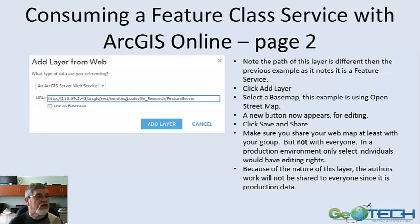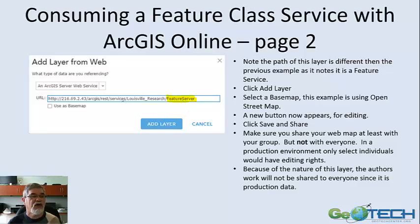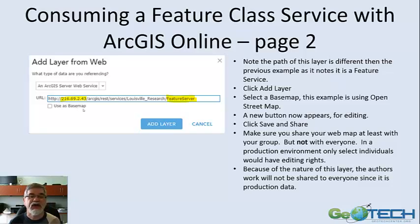We've suggested that we are using here a feature class service. If we look at the last part of this name, we will see that it is no longer a map service but instead is a feature service. This time we are using a feature service, and since this is a feature service coming off of my ArcGIS server, we have a public IP address for the server. But where the data actually is, which is in a relational database, it does not have a public IP — it has a private IP behind my firewall.